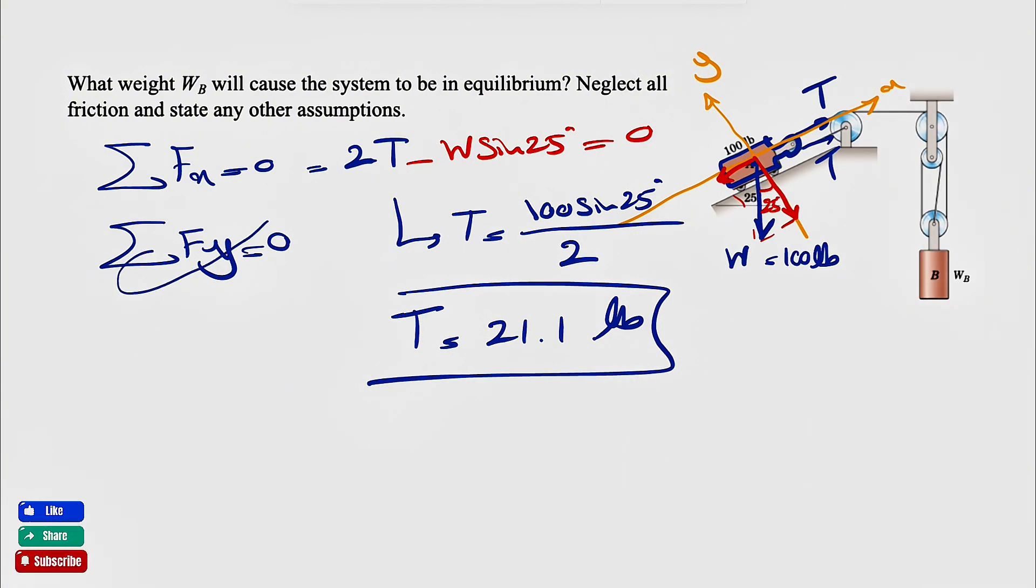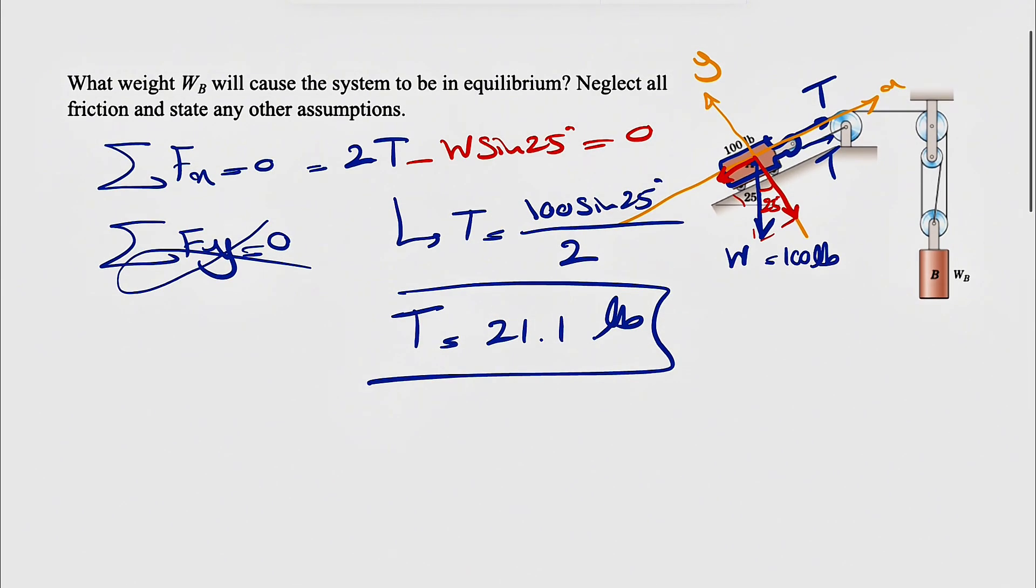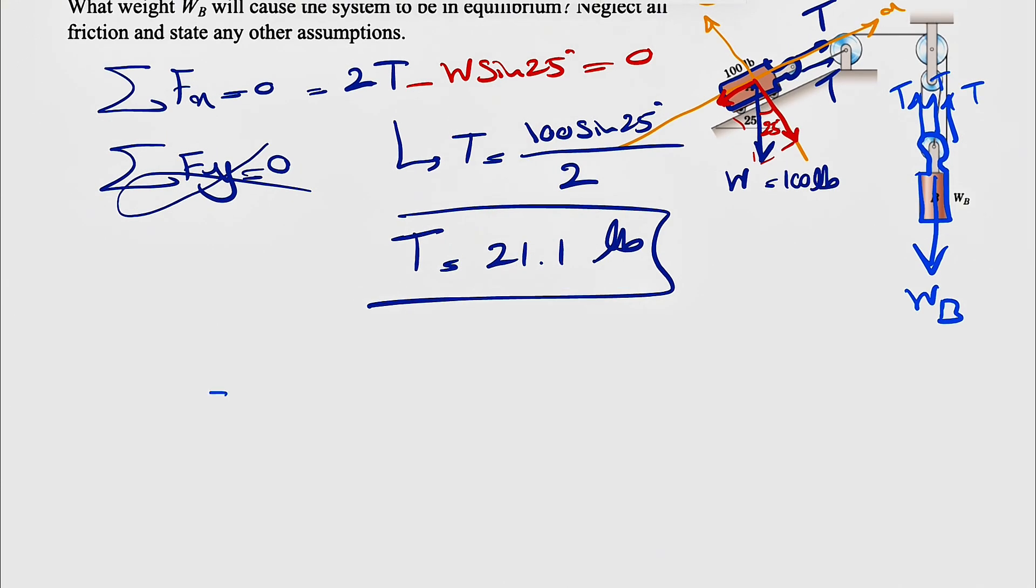And if we found the tension in the cable we don't need to even use our second equilibrium equations. And now we're going to move on to the free body diagram of the weight B and the pulley that is attached to that. So obviously we're going to have the weight of this part and we're going to assume in this question that all of these tensions are vertical and each of them are T, very similar to what we did in the previous part.